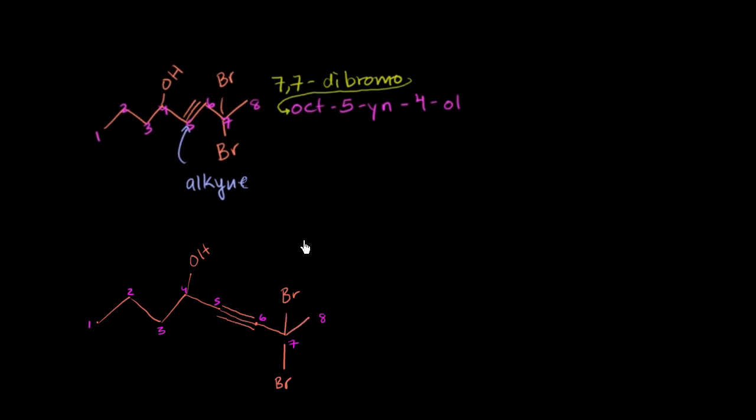And the whole point why this right over here, that this is the correct way to draw it, is that triple bonds, this triple bond right here, it forces a linear configuration. So on both sides of that triple bond, you would go straight out.